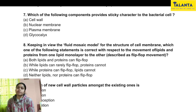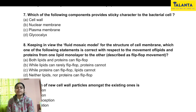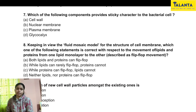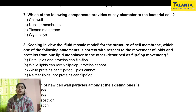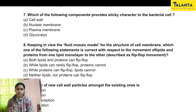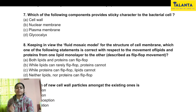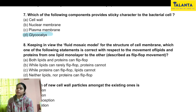Next question: Which of the following components provides sticky character to the bacterial cell? Looking at bacterial cell structure, glycocalyx is a coat or covering made up of polysaccharides. These polysaccharides form a coat specific to bacteria and possess stickiness. This is a direct informative question. The correct answer is Option D: glycocalyx.